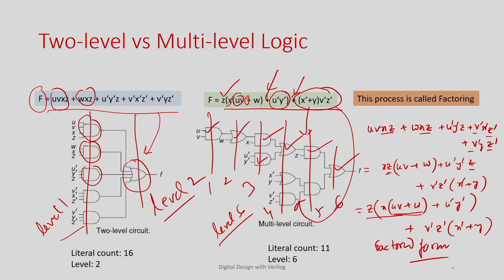Sometimes multilevel logic gives you a better circuit. For example, although the minimal sum-of-product expression has 16 literals, the factored form has only 11 literals. Since the number of literals contributes to the overall area, fewer literals means less area.